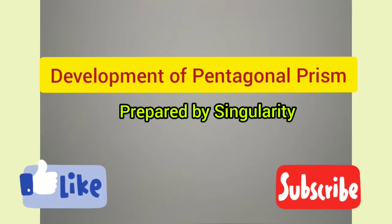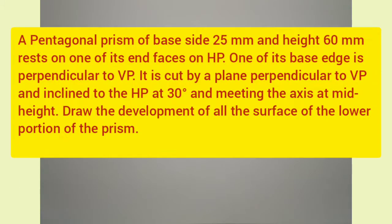Hi all. In this video we are going to draw the development of a pentagonal prism. The question is: a pentagonal prism of base side 25 mm and height 60 mm rests on one of its end faces on HP. One of its base edges is perpendicular to VP. It is cut by a plane perpendicular to VP and inclined to the HP at 30 degrees and meeting the axis at mid height. Draw the development of all the surfaces of the lower portion of the prism.